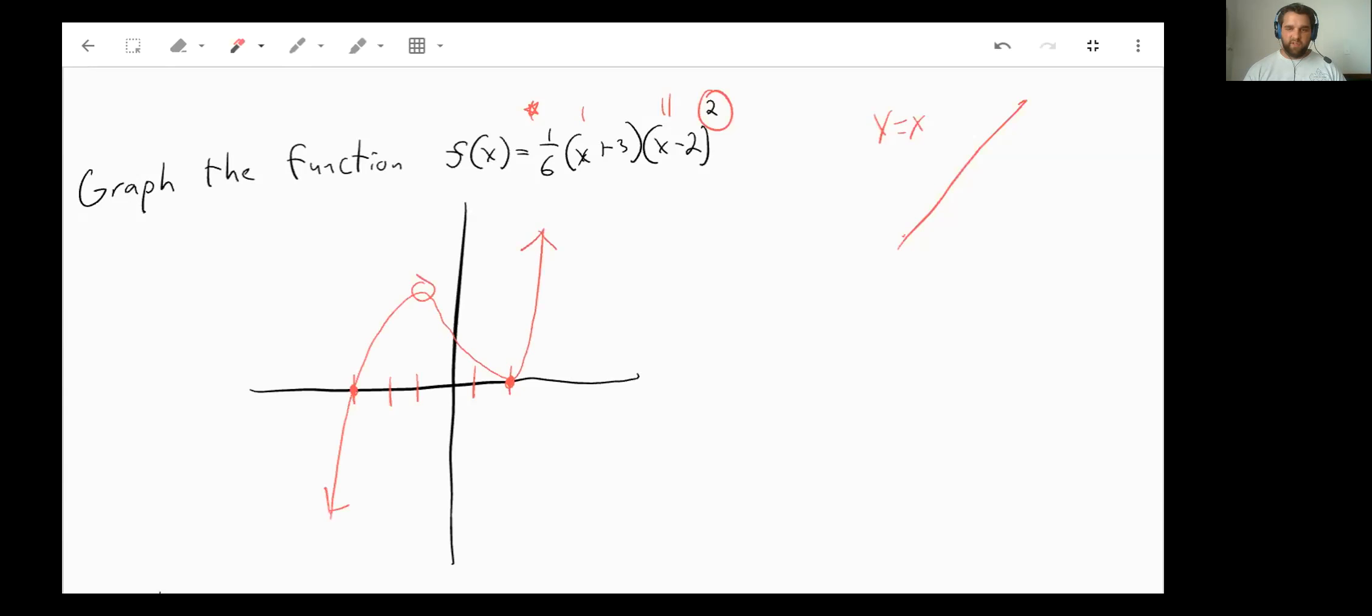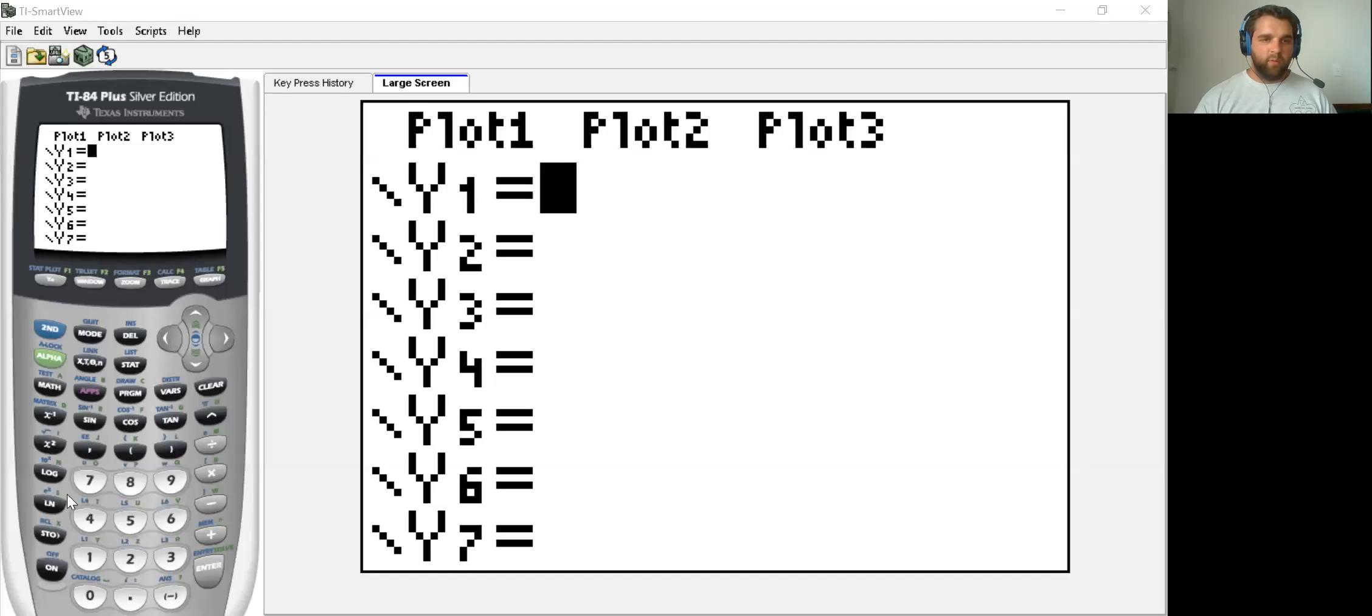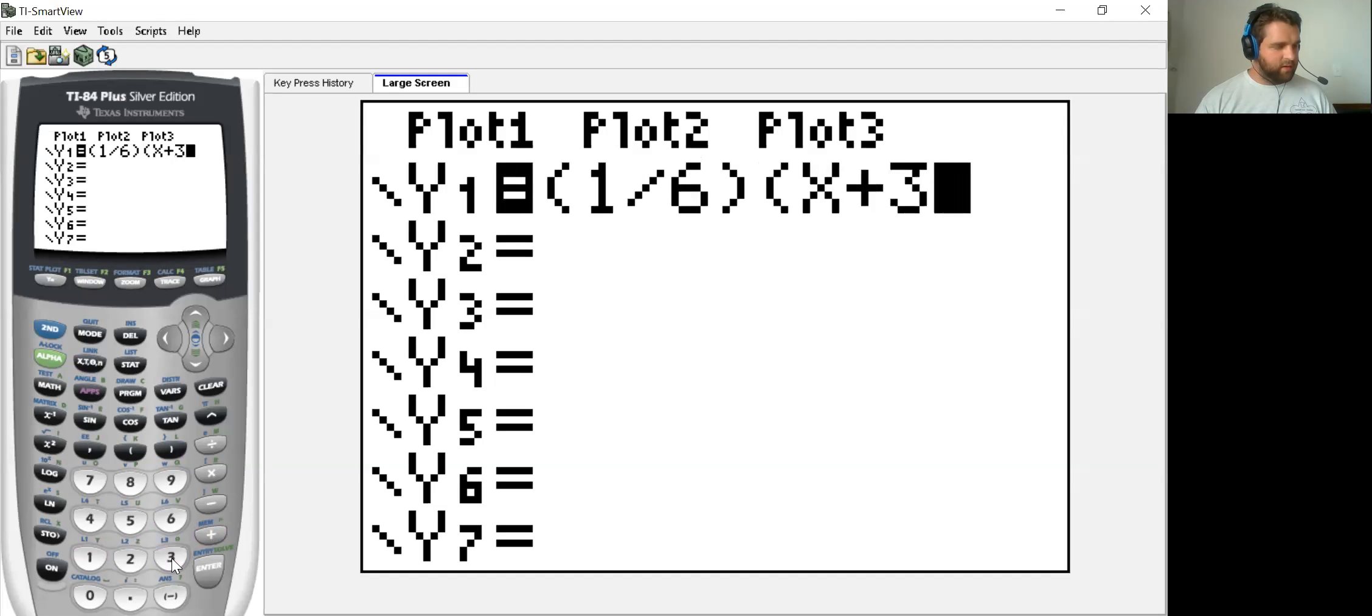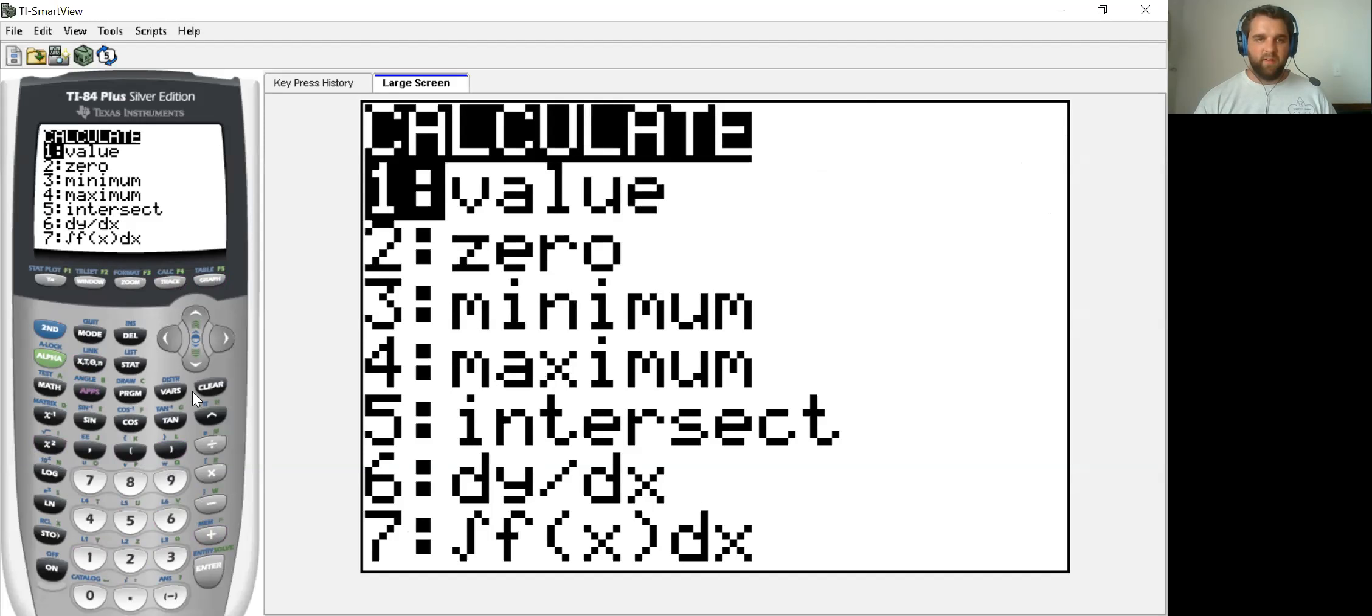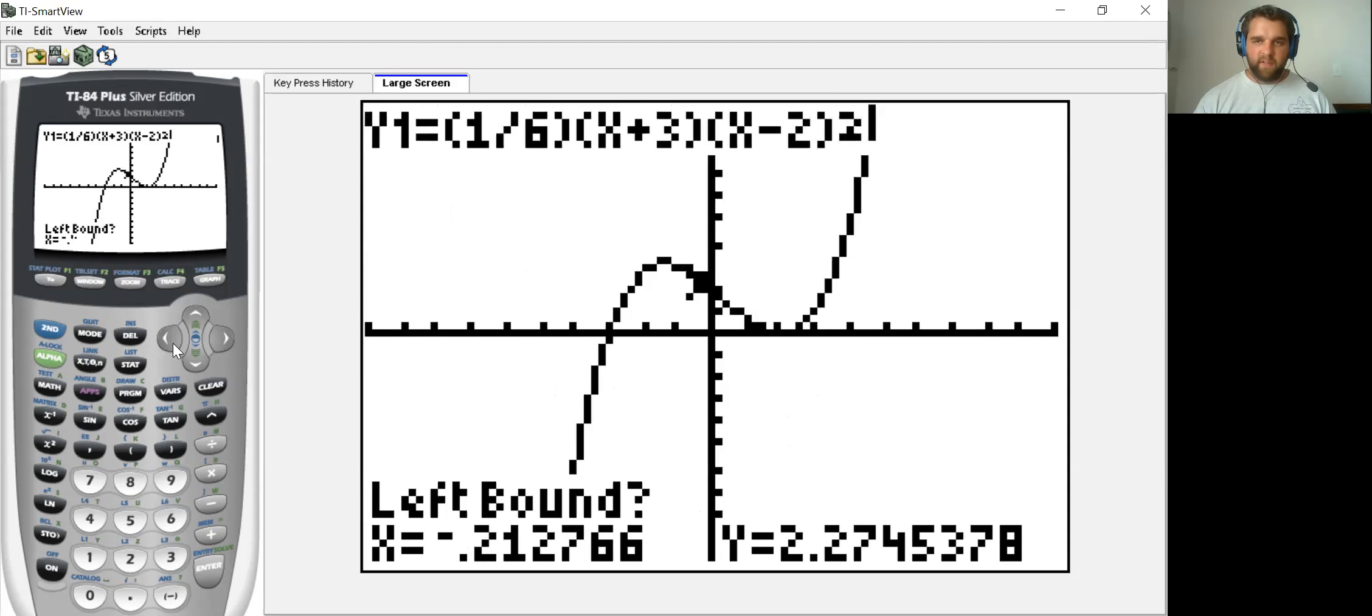And for that, I'd just strongly suggest using a calculator. So if we come to our calculator, we can type in that one-sixth times x plus 3 times x minus 2 squared. And if we just come back and just look at our graph, it should come up, it goes through, it bounces, just like we talked about, and then shoots back up. So if we just need to find this topmost point, we can go and trace, and we can find our maximum point.